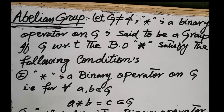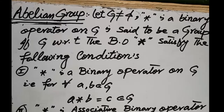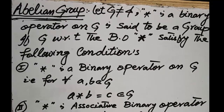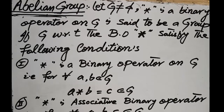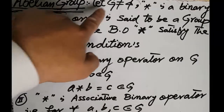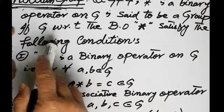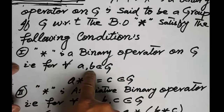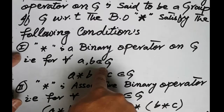Our next topic is abelian group. After the definition of group, we have to define an abelian group or commutative group. Suppose that G is a non-empty set and star is a binary operator on G, that is, for each two elements a, b belonging to the set G.